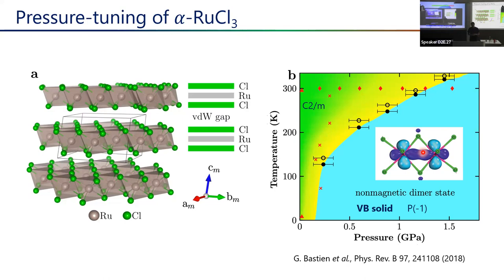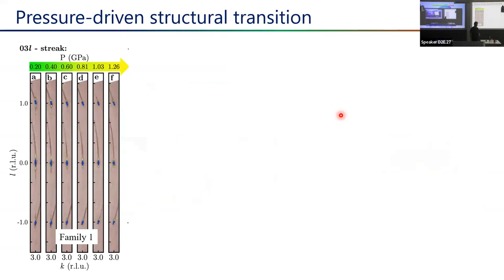That dimer state is not what we want for a quantum spin liquid — we don't want dimers crystallizing out on the lattice; we want the superposition of different configurations. But we looked more carefully at the evolution of the system with increasing pressure. Starting from the monoclinic phase (green), there is an intermediate yellow region before entering the dimer phase (blue), and I want to tell you what's happening in that yellow region.